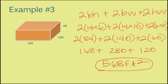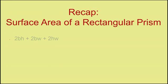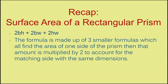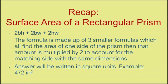Let's recap how to find the surface area of a rectangular prism. The formula used to find the surface area of a rectangular prism is 2BH plus 2BW plus 2HW. The formula is made up of three smaller formulas, which all find the area of one side of the prism. Then that amount is multiplied by 2 to account for the matching side with the same dimensions. Your answer is going to be written in square units. For example, 472 inches square.